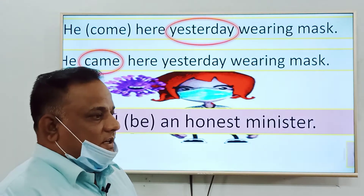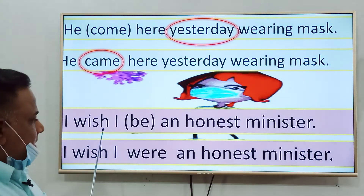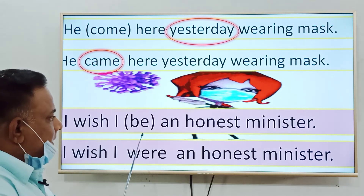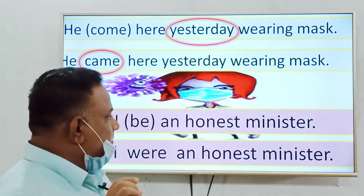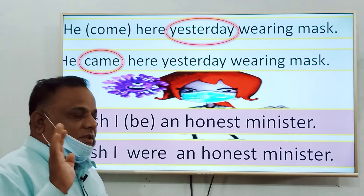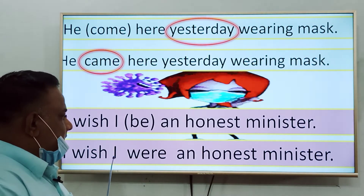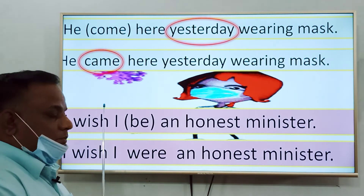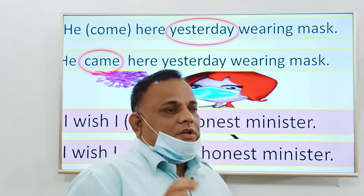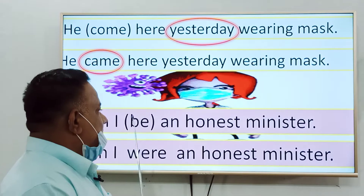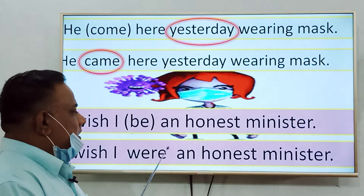Now we will see the second example. If you see 'wish' in a sentence and if you see 'be' in the bracket or in the box, then you must be careful using the verb. Here you have to use 'were' in place of the verb. Whether the subject is singular, plural, third person, second person, or first person — that does not matter. You have to use only 'were' in the blank. So the right answer will be: 'I wish I were an honest minister.'